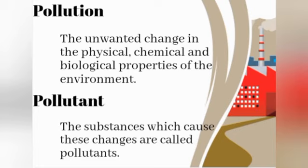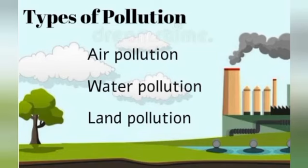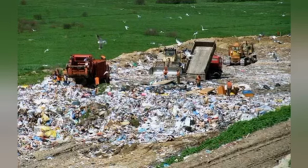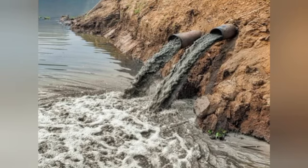There is an unwanted change in the physical, chemical, and biological properties of the environment — this is known as pollution. The substances which cause these changes are called pollutants. Pollution is majorly classified into three types: air pollution, water pollution, and land pollution. Due to increasing human activities, a lot of chemical substances are produced artificially which harm all living and non-living things in the world.